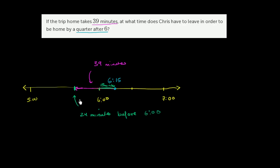So this time right over here is 24 minutes before 6 o'clock. Going from 6:15, if you go 15 minutes back, you get to 6 o'clock. We have to go 39, so we have 24 left. So then we have to go 24 minutes before 6 o'clock.